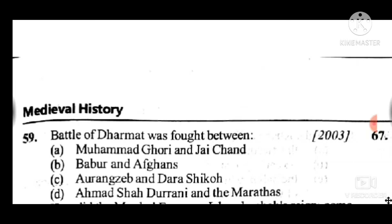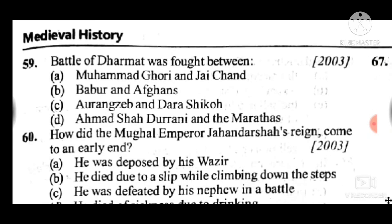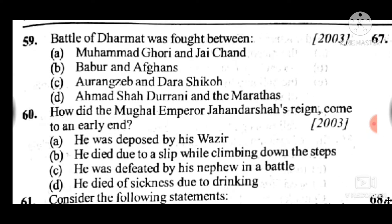Question 59: The battle of Dharmat was fought between — answer to question 59 is C. Question 60: How did the Mughal Emperor Jahandar Shah's reign come to an early end? Answer to question 60 is C: he was defeated by his nephew in a battle.